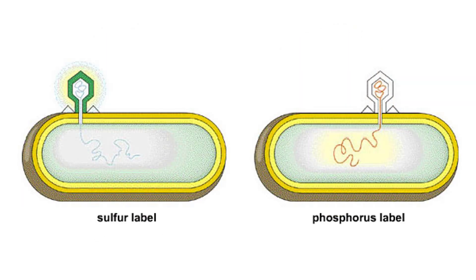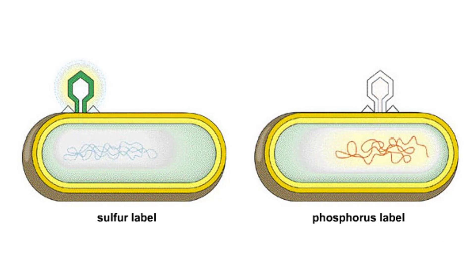The radioactively labeled viruses were allowed to infect bacteria. After infection, empty shells of viral particles remained attached to the bacterial wall. To shake these particles loose, the cultures were whirled in a blender.